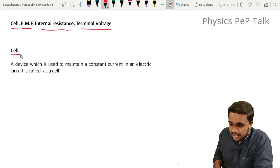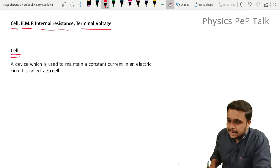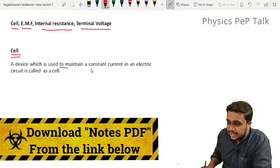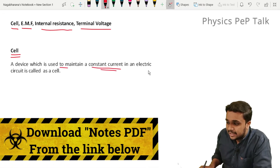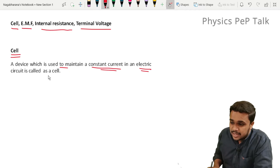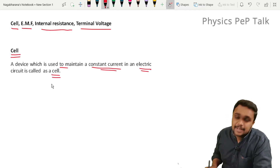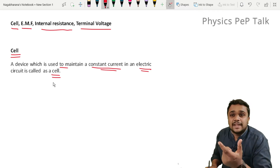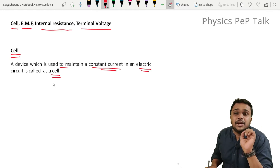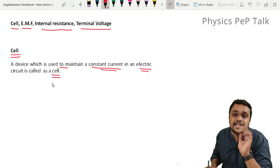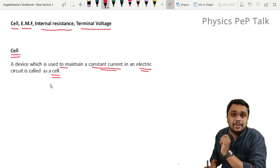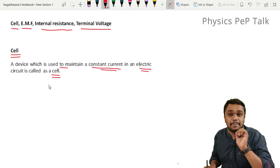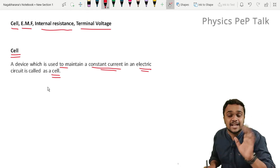First, let us define what is a cell. A device which is used to maintain a constant current in an electric circuit is called a cell. This device will have the ability to maintain a constant current in a circuit. You can connect this in a circuit and maintain a constant current.